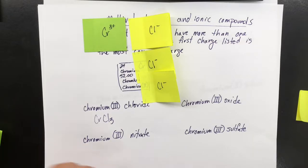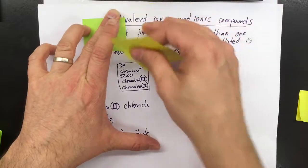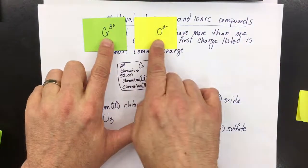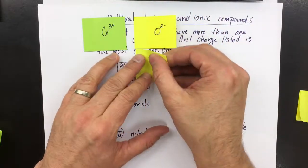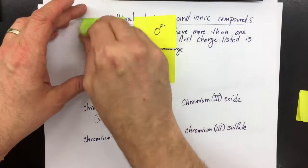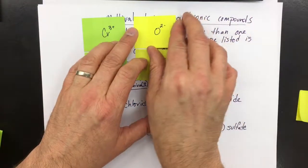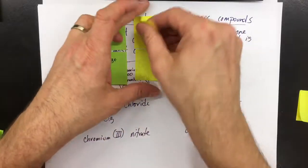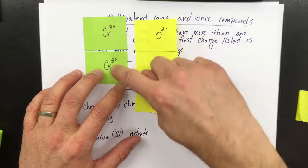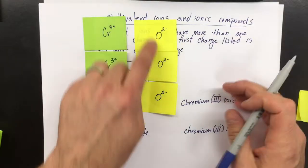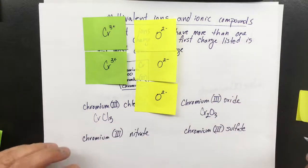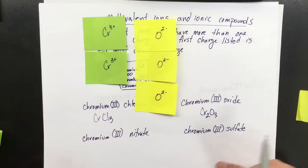Chromium(III) oxide: if we take our chlorides and put them over here, and then take our oxide, you can see that we need to make these equal. If I had another oxide, that would be 4- and 3+. So I need another chromium. If I've got 6+, I need to have 6-. I will have that when I have two chromium(III)s and three oxides. So Cr2O3 is the correct formula for chromium(III) oxide.